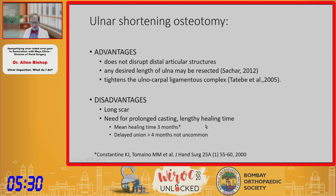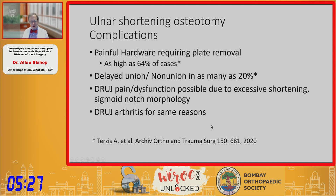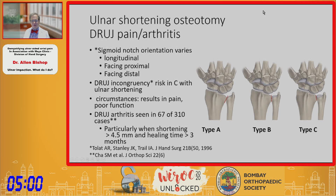Mean healing times of three months, with union taking more than four months or not healing at all, are not uncommon. Painful hardware frequently requires plate removal as a second procedure. Delayed union or non-union may occur in as many as 20% of patients in some reports. Distal radioulnar joint pain or dysfunction may occur due to excessive shortening or sigmoid notch morphology — particularly the type C variant where the sigmoid notch is oriented facing distally, potentially causing abnormal contact forces with ulnar shortening.